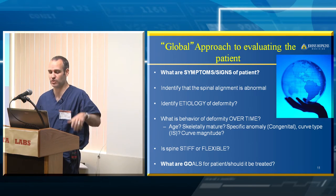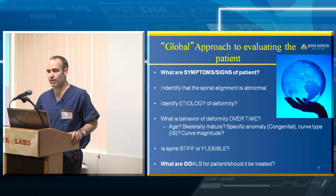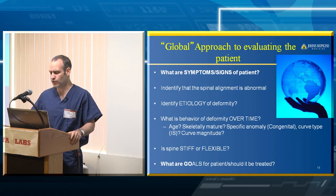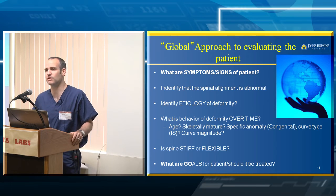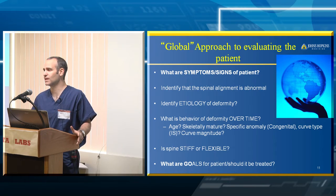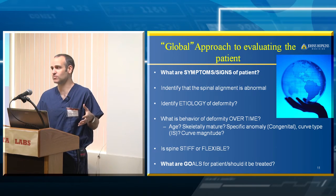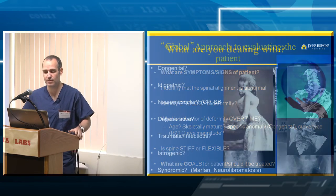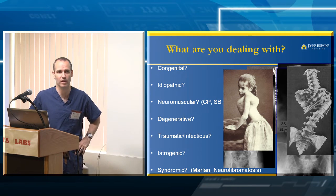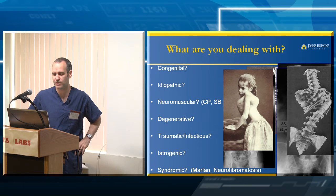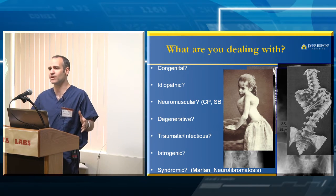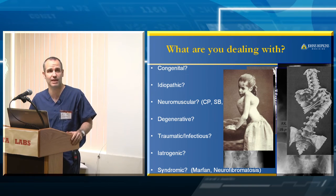The global approach to these patients is to think about what the symptoms are — what the patient is complaining of — number one. Then identify that the alignment is abnormal by looking at standing films and characterizing the curves. What is the etiology? That will define what you decide to do. How is this going to behave over time? Clues include age, skeletal maturity, curve magnitude, and type of anomaly. Is it stiff or flexible? And finally, what are the goals for the patient — should they even be treated? You want to characterize whether it's congenital, idiopathic, neuromuscular, degenerative, traumatic, infectious, iatrogenic, or syndromic, like this NF patient.